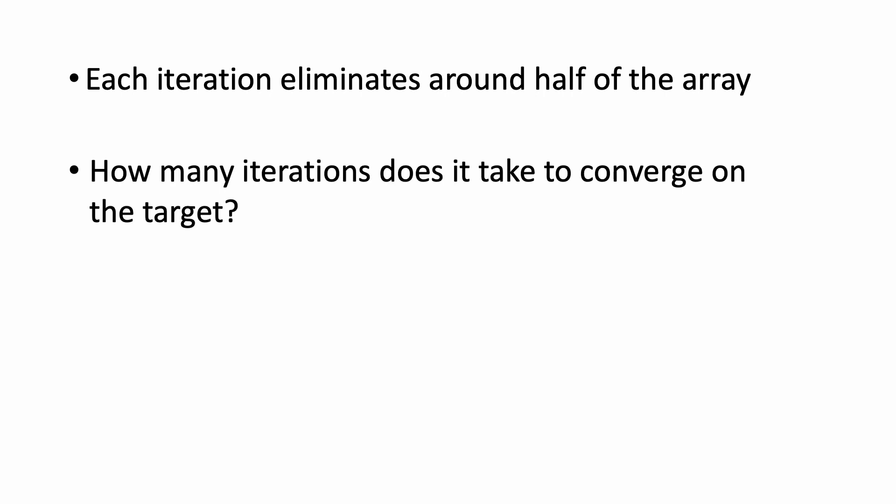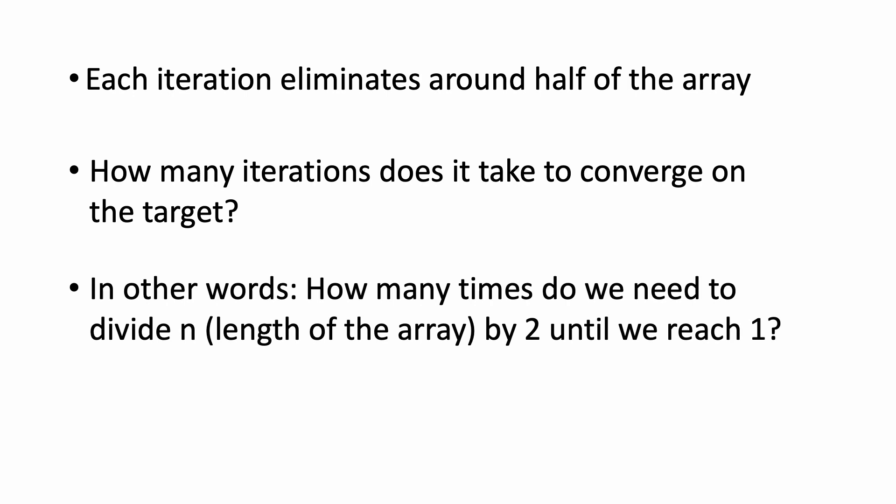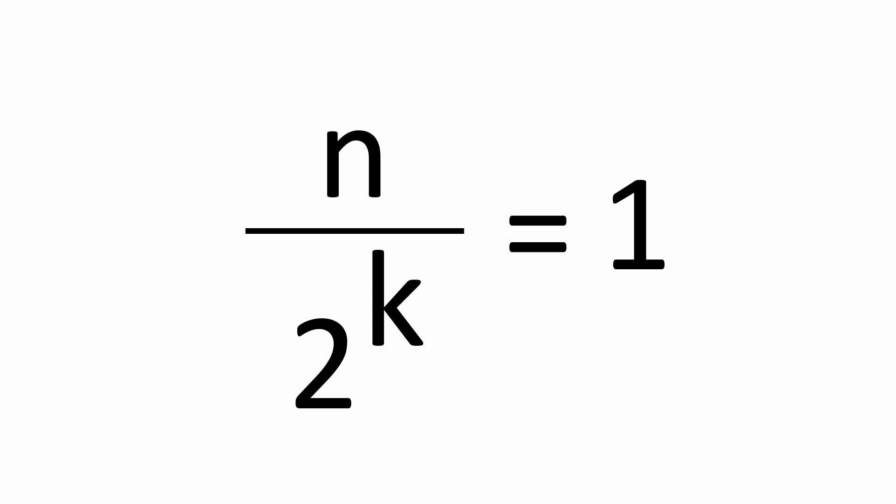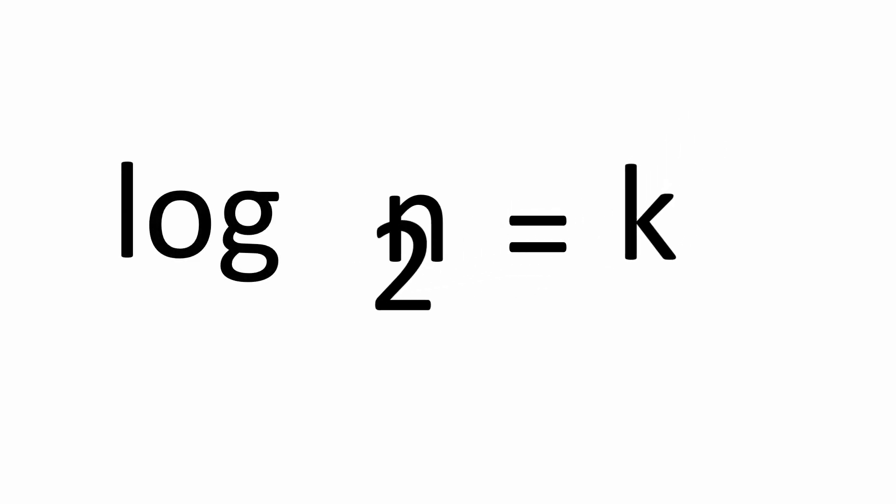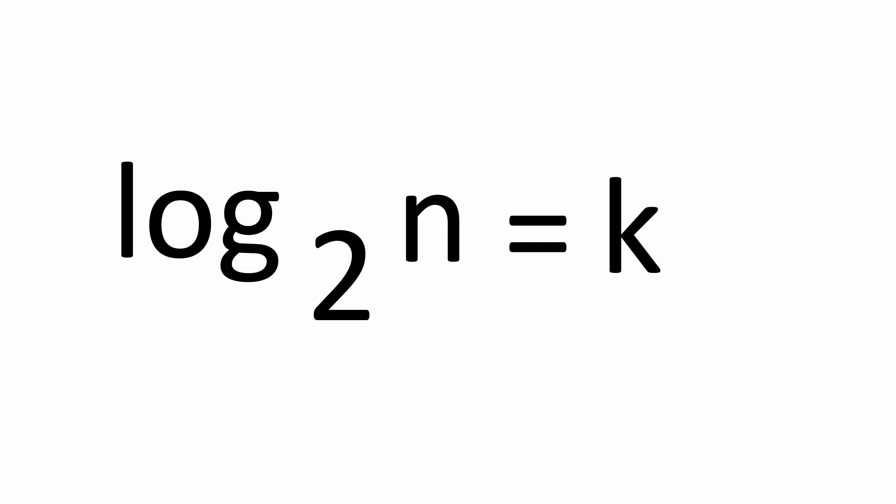So now the question is, how many iterations does it take to converge on the target? Well, another way to think of it is, how many times do we need to divide n by 2 until we reach 1? Let's say k is the number of times we need to divide n by 2 to reach 1. Then the equation is n over 2 to the k power equals 1, and we need to solve for k. Let's move 2 to the k power over to the right side, and we can isolate k by using logarithms, meaning that we can rearrange this to be log of n with a base of 2 equals k. So now we know that it takes log base 2 of n steps to complete the algorithm. But in big O analysis, we drop the base, so we say that this algorithm runs in O of log n time.